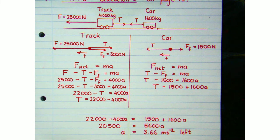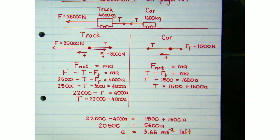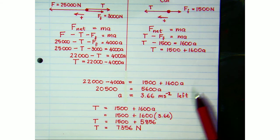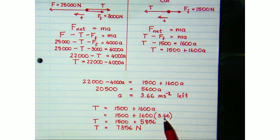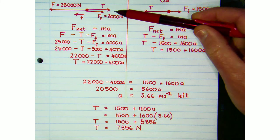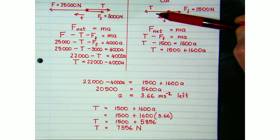To find the tension, we substitute that acceleration into either expression. Using the car's equation and substituting a = 3.66, we get a tension of 7,356 Newtons. No single direction is stated for the tension magnitude because its direction depends on which vehicle we're considering — it acts to the right on the truck and to the left on the car.